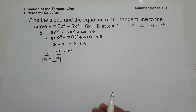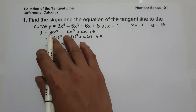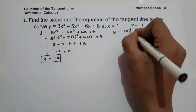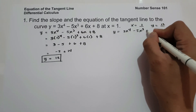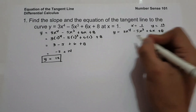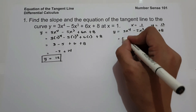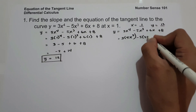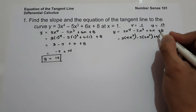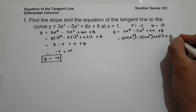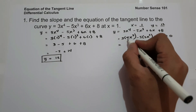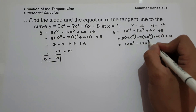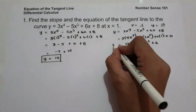Now let us find the slope. To find the slope, we need to differentiate this equation: y equals 3x raised to 4 minus 5x cubed plus 6x plus 8. The derivative of 3x raised to 4 is 3 times 4x cubed, minus 5 times 3x squared, plus 6. The derivative of x is 1, and the derivative of 8 is 0.